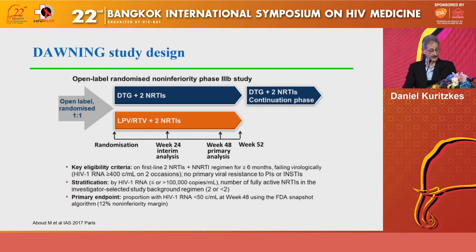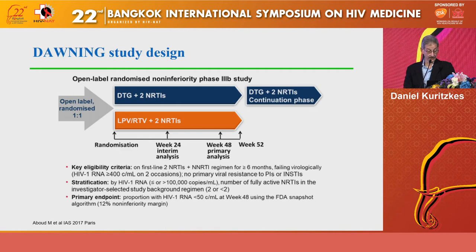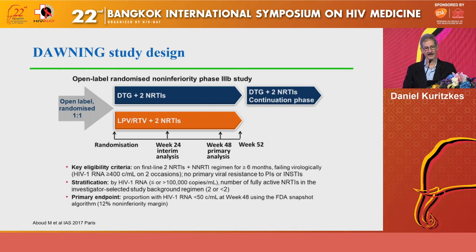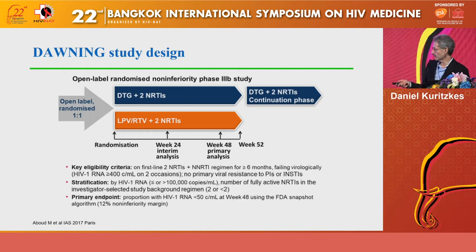The Dawning study compared dolutegravir with two nucleoside RT inhibitors to boosted lopinavir with two nucleoside RT inhibitors in participants failing on a two-nuc plus NNRTI first-line regimen. Participants had to have been on that regimen for at least six months, have virus loads above 400 copies on two occasions, and have no primary resistance to PIs or integrase inhibitors. One key aspect is that this study introduced genotyping technology not necessarily widely available in routine clinical practice.